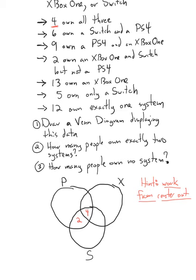We did the first two. Let's do the next one. Nine own a PlayStation 4 and an Xbox One — the reasoning is the same as above. There were six people that owned a Switch and a PlayStation 4. Now there are nine people that own a PlayStation 4 and an Xbox One — that's these two circles. We already have four that also own a Switch, so there must be five that don't own a Switch.